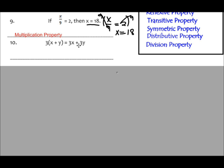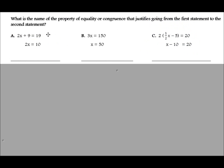Number 10: pause the video and look at the first step to see how it became the last step. We should have gotten the distributive property. This is how a proof is going to look — you'll have one step and then a following step underneath. They're not going to show you how they got from the first step to the second, and they're not going to show any work.